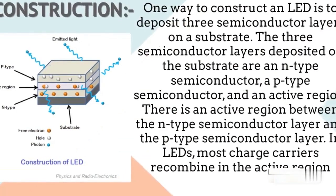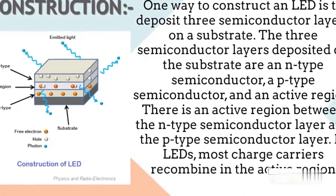One way to construct an LED is to deposit three semiconductor layers on a substrate. The three semiconductor layers deposited on the substrate are an n-type semiconductor, a p-type semiconductor, and an active region. There is an active region between the n-type semiconductor layer and the p-type semiconductor layer.